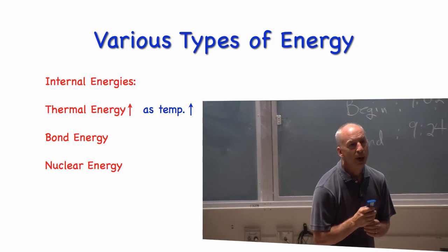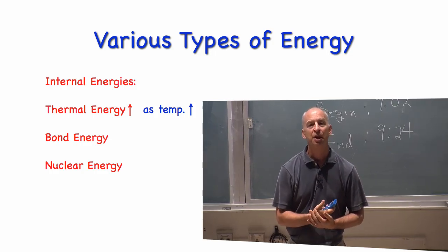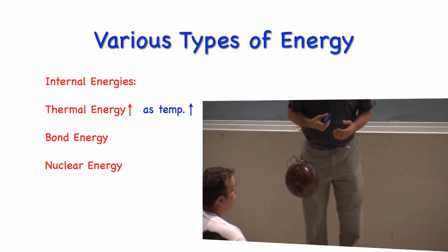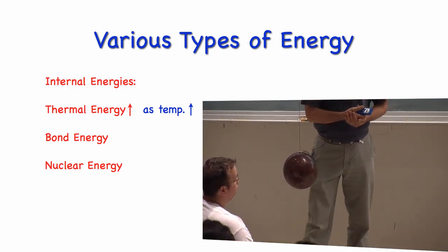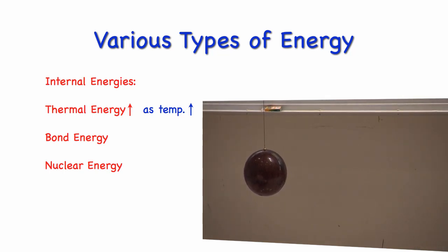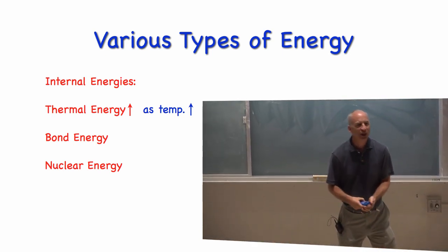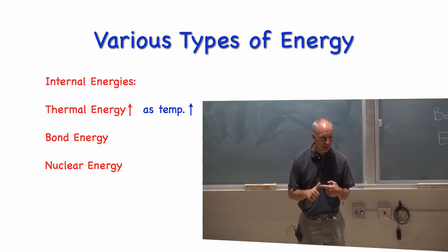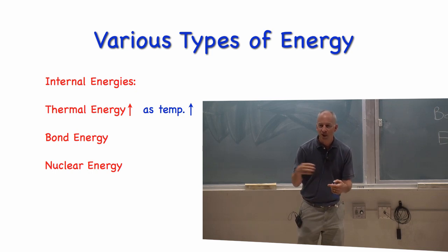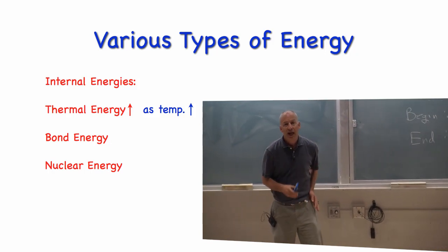Most of what you've been talking about could be considered, in a general term, internal energies. This bowling ball — there are a lot of different kinds of energies associated with it that are all due to stuff that's inside it and not anything else around. My example would be: think of that bowling ball. It is a collection of protons and neutrons and electrons, put together in really specific ways.